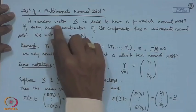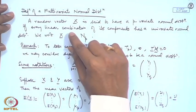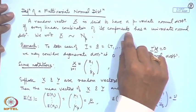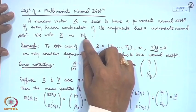Yesterday we introduced the multivariate normal distribution, a p-dimensional distribution. The definition was in terms of linear combinations: a random vector x is said to have a p-variate normal distribution if every linear combination of its components has a univariate normal distribution. The notational form is x follows Np.